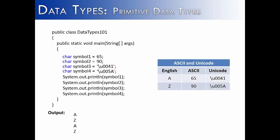So as you can see from the table, A in ASCII is 65 and in Unicode it's 0041. Or Z is 90 in ASCII or 005A in Unicode. It's important to note that Unicode values are enclosed within single quotes.